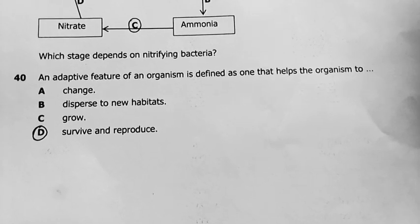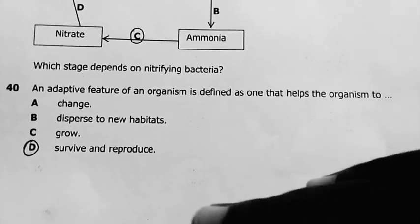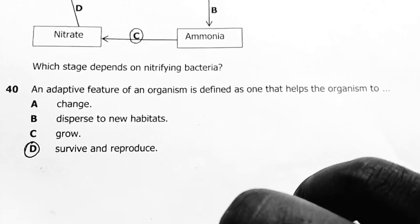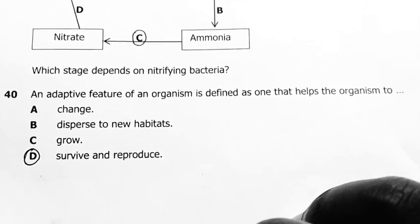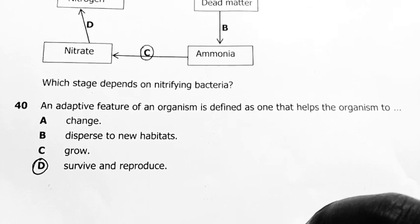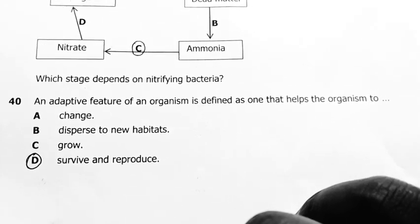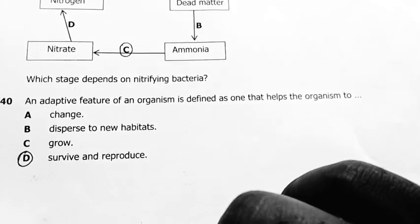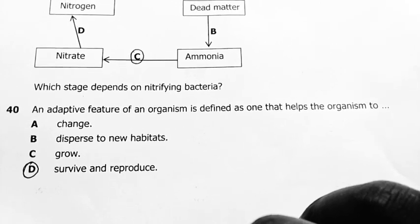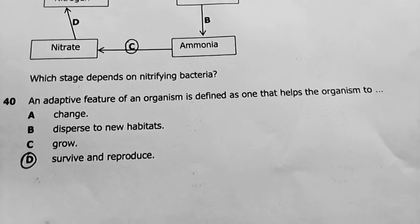The last question, number 40: an adaptive feature of an organism is defined as one that helps the organism to survive and reproduce — not just change. If an organism has adapted, it means it survives and is capable of reproducing in that new environment, producing viable offspring to ensure the continuity of the species. This marks the end of our biology paper 1 for the year 2022.